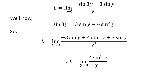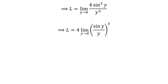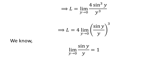Further simplification gives us: L is equal to the limit of 4 times cube of sin(y) upon cube of y as y approaches 0. We can rewrite this as L equals 4 times the limit of (sin y / y)³ as y approaches 0. We know the limit of sin(y) upon y as y approaches 0 is equal to 1. Applying the above fact gives us the limit L is equal to 4.